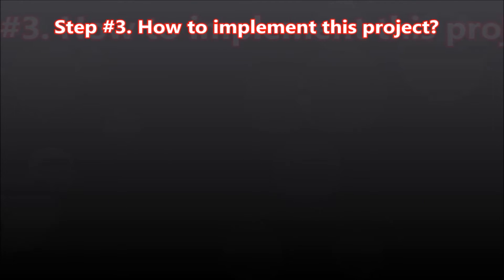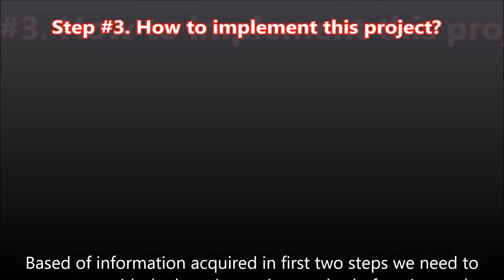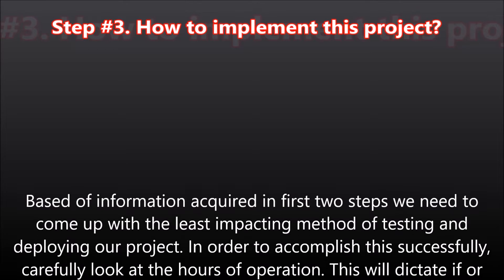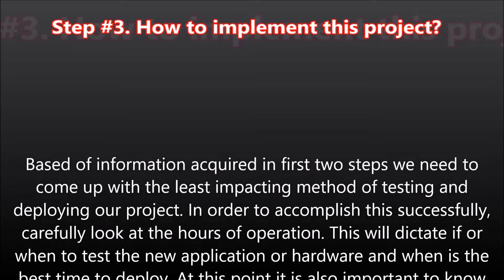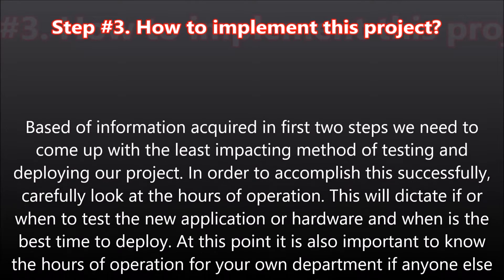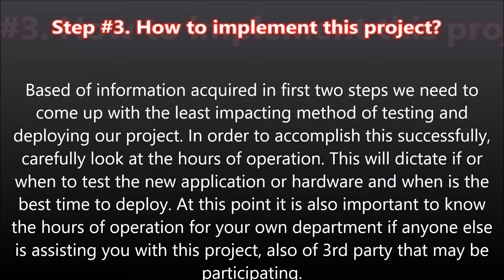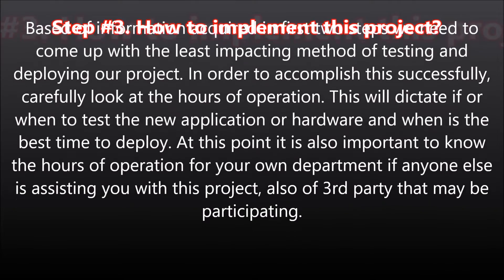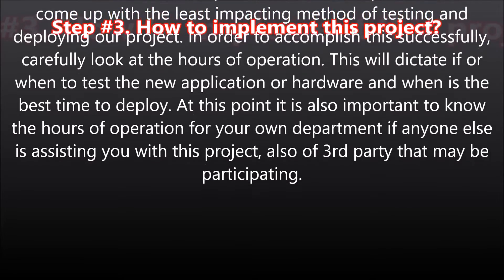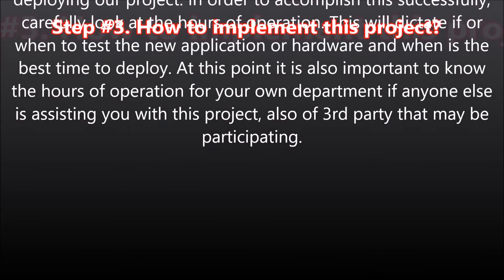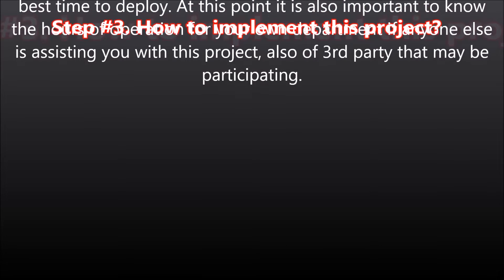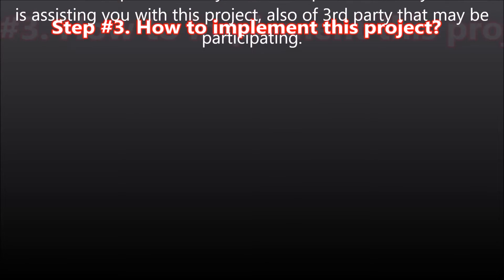Step number three: how to implement this project. Based on information acquired in the first two steps, we need to come up with the least impacting method of testing and deploying our project. Carefully look at the hours of operation — this will dictate if or when to test a new application or hardware, and when is the best time to deploy. It is also important to know the hours of operation for your own department if anyone else is assisting you, as well as any third parties that may be participating.